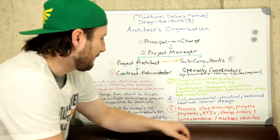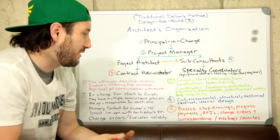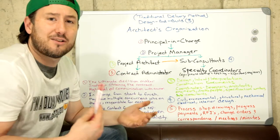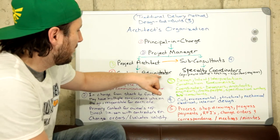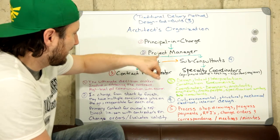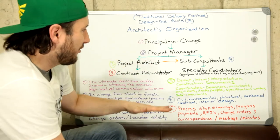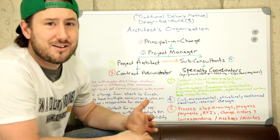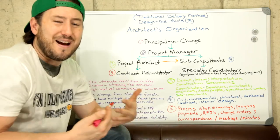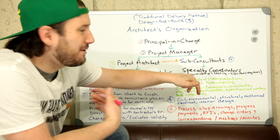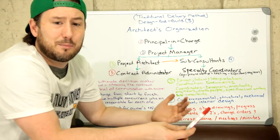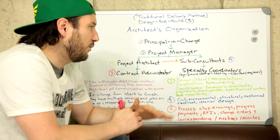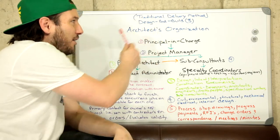The contract administrator processes all the information: shop drawings, progress payments, RFIs, change orders, and records all correspondence for the project. They hold meetings and distribute meeting minutes, staying involved in the day-to-day construction and relaying information up the chain to the project architect. Specialty coordinators include outside inspection agencies, manufacturer representatives for equipment startup and testing, and project engineers or power engineers who program HVAC systems.